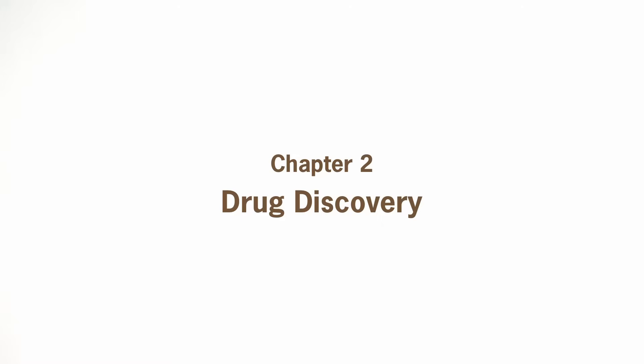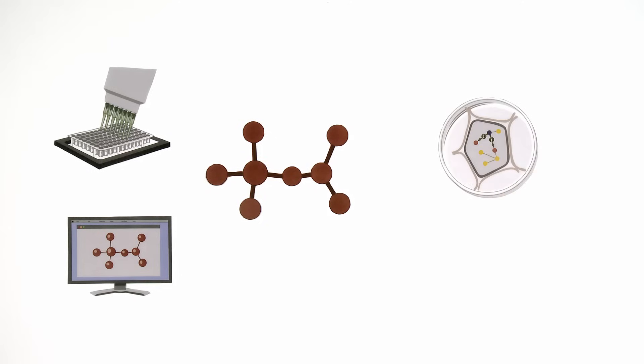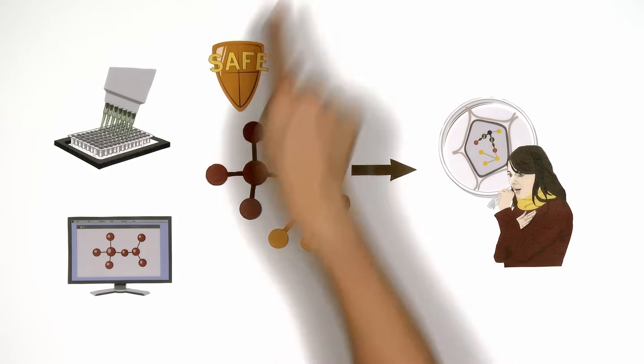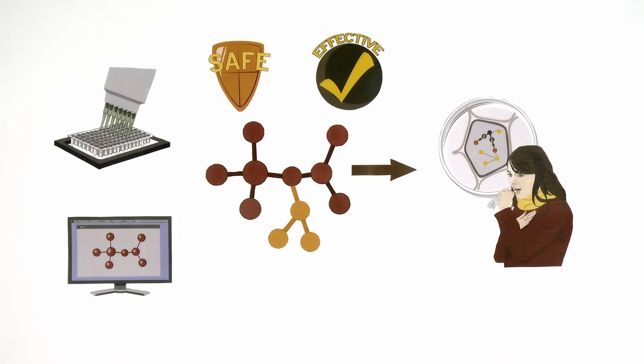In drug discovery, several methods like high-throughput screening and computer-based design are used to find chemical compounds, or biologics, that bind to the identified target. If a compound modulates the target in a way that is expected to alter the disease, this so-called hit will be refined to improve its safety and effectiveness, eventually becoming a drug candidate.